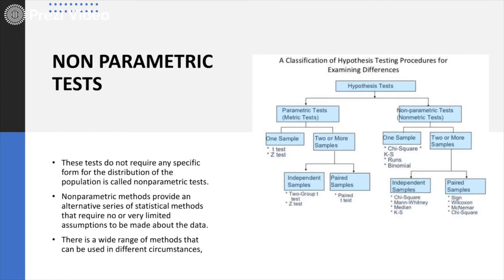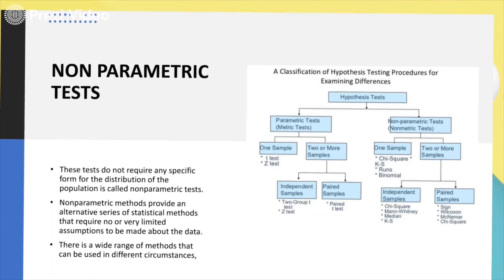In upcoming videos, we shall discuss in detail the non-parametric tests, including the Wilcoxon test, paired test, chi-square, Mann-Whitney test, and the Sign-Wilcoxon test. Students, don't get confused — you need to first understand in biostatistics the basic difference between parametric and non-parametric tests.